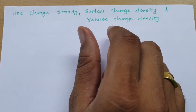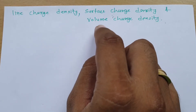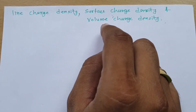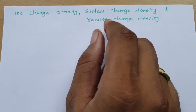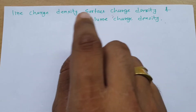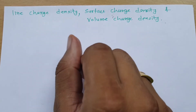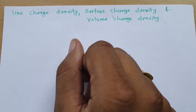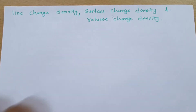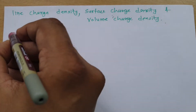I'll show you the formula with its physical understanding, so that in future you can be able to solve examples based on line charge, surface charge, and volume charge. Let us begin this session with the first agenda: line charge density.